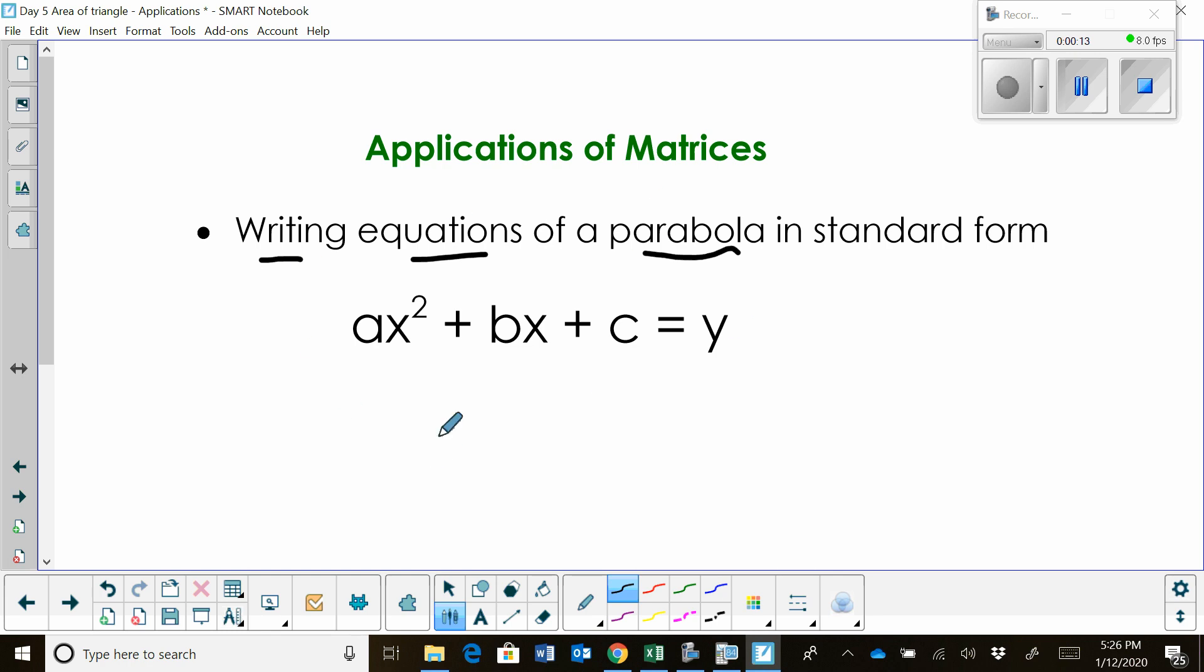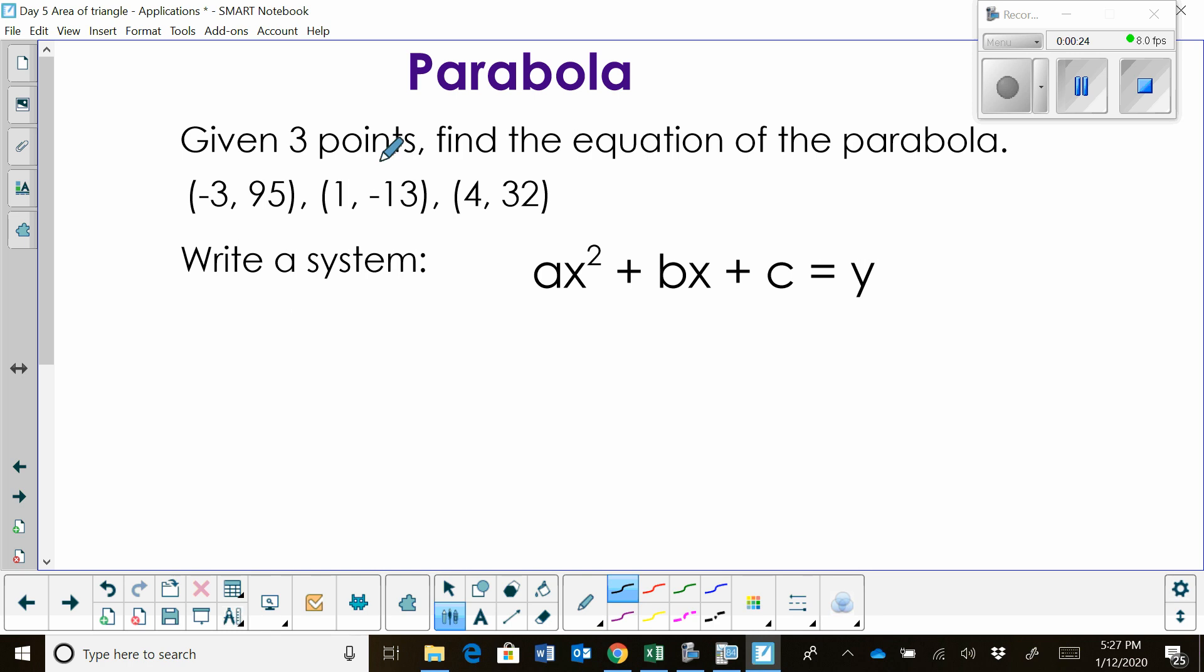Right here we have the equation ax² + bx + c = y. That's the equation of a parabola in standard form. Now, to write the equation we have to be given three points. So we're given three points: (-3, 95), (1, -13), and (4, 32).